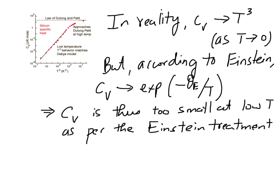In reality you do not have one frequency — you have a spectrum of frequencies. This had to be rigorously incorporated into the treatment, and this was done by Debye; that is called the Debye model. Once you incorporate this feature into the Einstein model, the specific heat behavior even at low temperatures can be correctly captured.